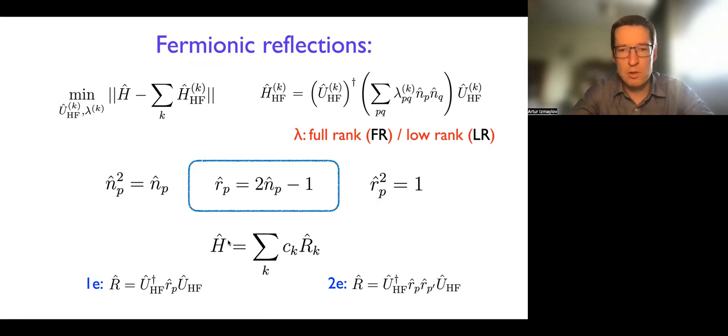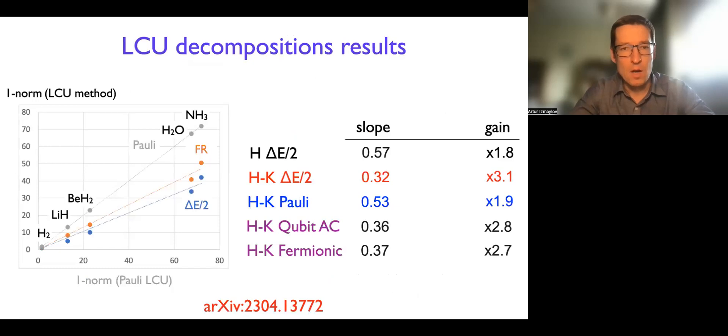At any rate, your Hamiltonian becomes the linear combination of these reflection operators. That's what you can do in fermionic representation before going to the qubit space. All right, so now let's see some results of this.